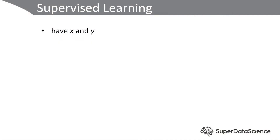With supervised learning problems, we have some input as well as some output. Inputs are typically denoted with X and outcomes are typically denoted with Y. This means that we have what we call a labeled data set. X is the input data — the raw data, or it could even be preprocessed data that flows into our model — and the outcome that we would like our model to learn is this Y, this output.